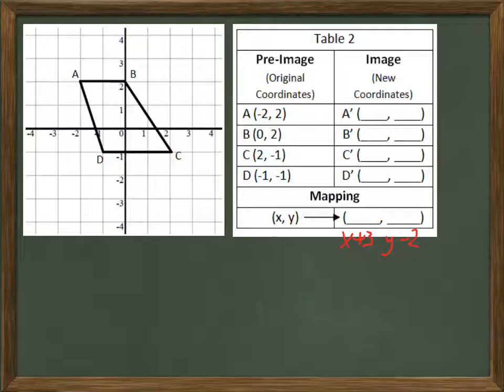But let's say what would happen if we multiplied the x and y coordinates by some number? So let's say that we have a mapping of x, y changes to 2x and 2y. So we're multiplying the x and y coordinates by 2. So a used to be negative 2, 2. So now a prime is going to be negative 4, 4.